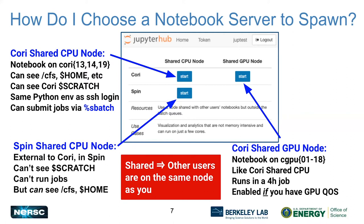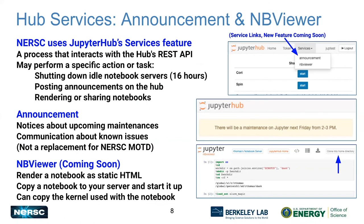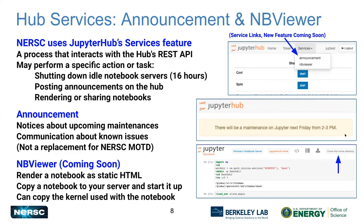On the hub, there are a couple of additional services rolling out within the next month. The hub allows us to run user-facing management services to provide Jupyter-specific information about the status of the service. If there's going to be an upcoming maintenance for Jupyter, you might see a banner on all the hub pages saying when it's going to be. This is not meant to replace the NERSC message of the day — usually there's a link from that to the NERSC message of the day — but hopefully it'll be useful.